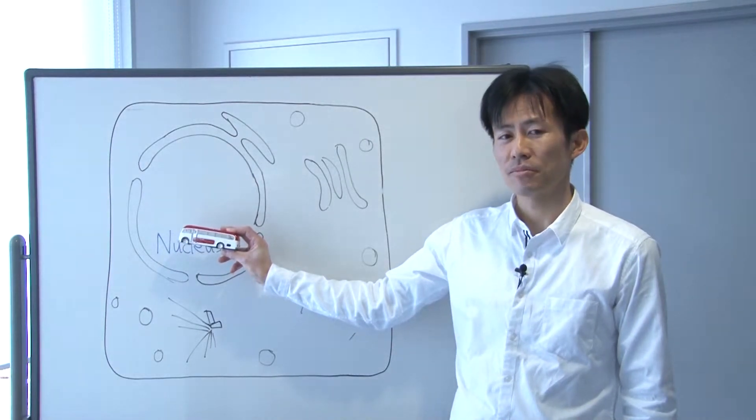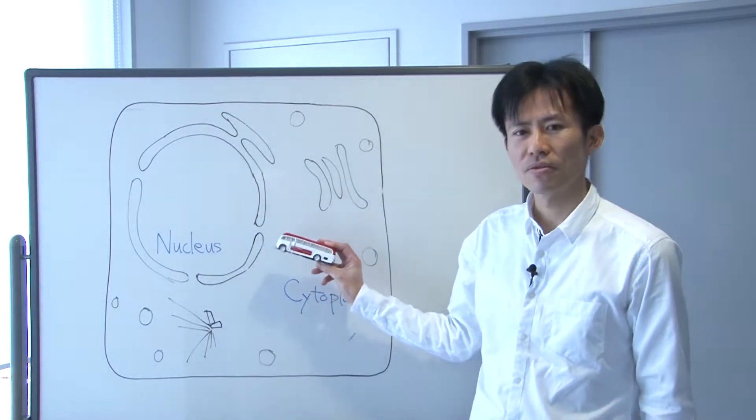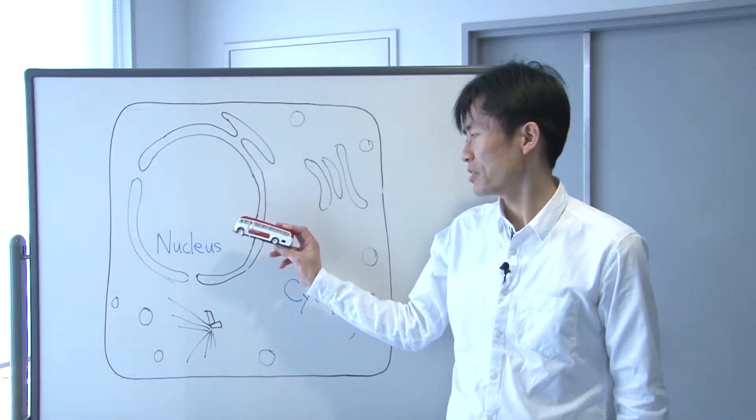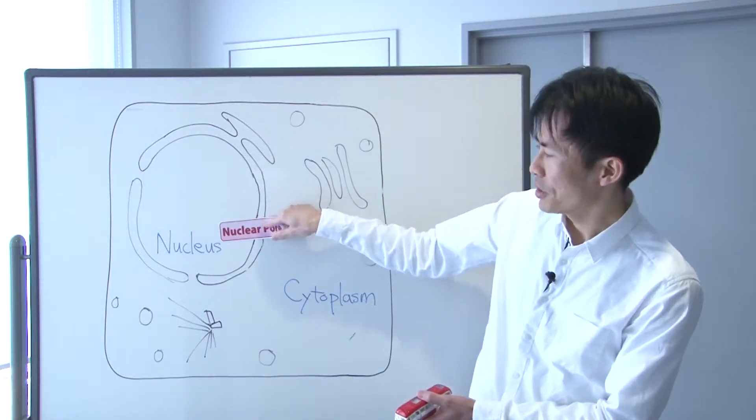chromosomal proteins, and splicing factors have to be delivered into the nucleus through a pore that exists in the nuclear envelope called the nuclear pore complex.